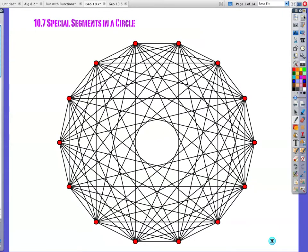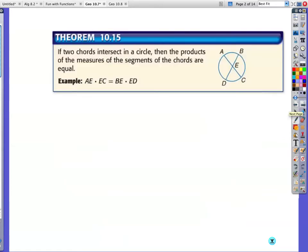Lesson 10-7, Special Segments in a Circle. There's a circle with all kinds of segments in it. Here's your big rule for the day. If two chords intersect in a circle, then the products of the measures of the segments of the chords are equal.